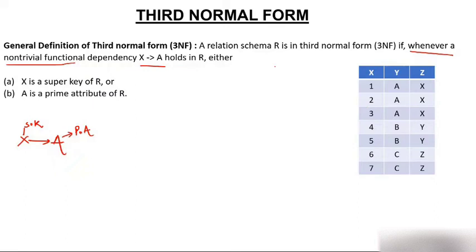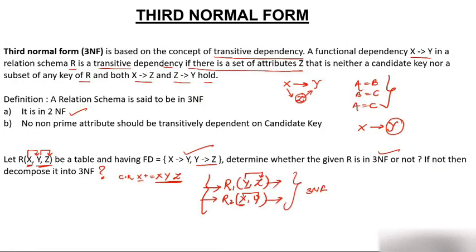Previously you solved the question where table R(X,Y,Z) had functional dependencies X→Y and Y→Z. You determined that this table is not in 3NF and decomposed it into R1 and R2.